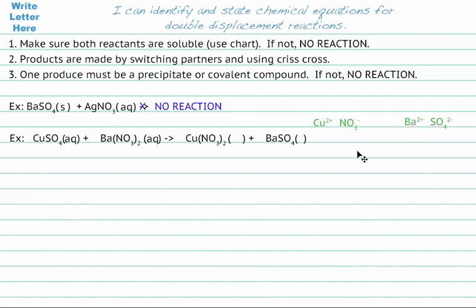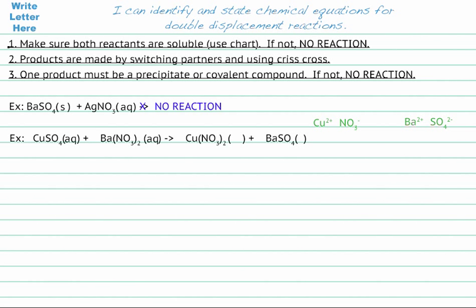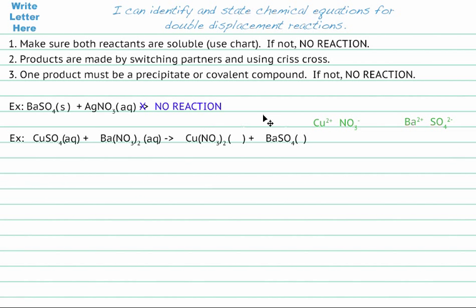Now we look back at our solubility tables. One product must be a precipitate or a covalent compound. Neither product here is covalent — both have a metal and a non-metal. But barium sulfate we already looked up: it is not soluble, so it will be a solid — a precipitate. Copper(II) nitrate: all nitrates are soluble, so this will be aqueous. As long as one product is a precipitate, the reaction happened. Now we just balance it: one barium, one barium; two nitrates, two nitrates; one copper, one copper; one sulfate, one sulfate — it's already balanced.